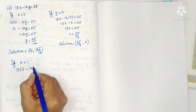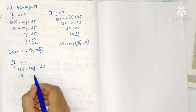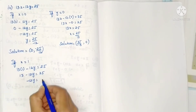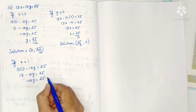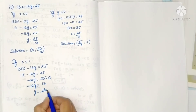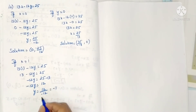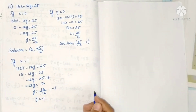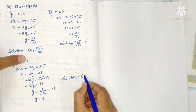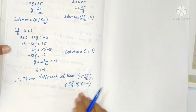Substituting x = 1: 13 minus 12y equals 25. Transposing 13: minus 12y equals 25 minus 13 equals 12. Since 12 is under multiplication, y equals 12 by minus 12 equals minus 1. Solution is (1, -1). Therefore, three different solutions are (0, -25/12), (25/13, 0), and (1, -1).